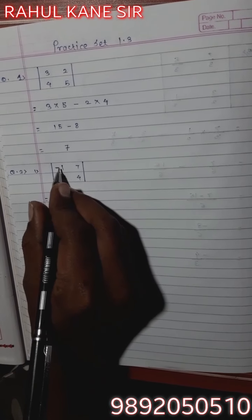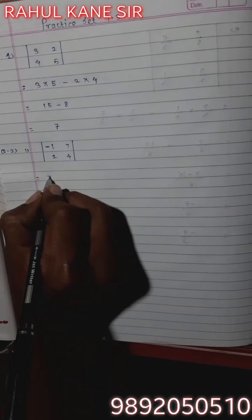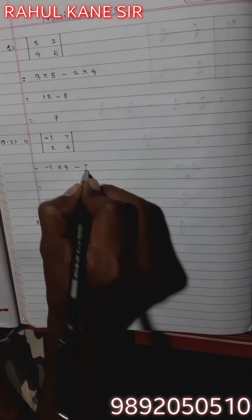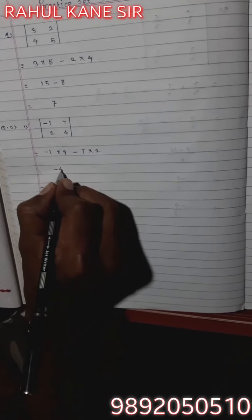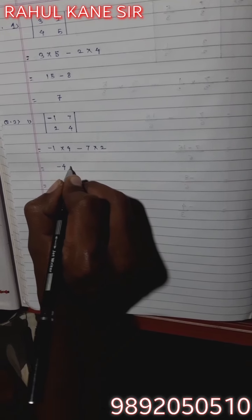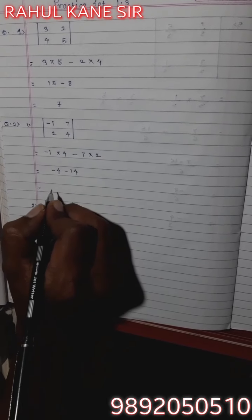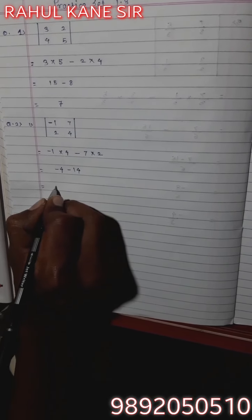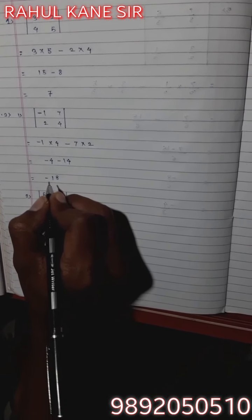Next one: absolute value of |-1, 7, 2, 4| equals (-1) multiplied by 4 minus 7 multiplied by 2. That gives -4 minus 14. Both numbers have the same sign, so we add them: minus 18. The value of the determinant is -18.